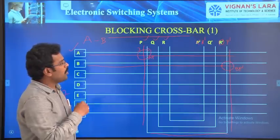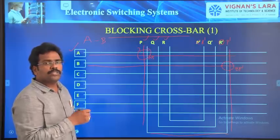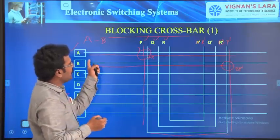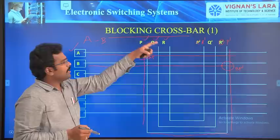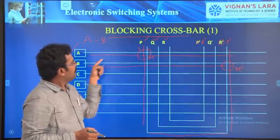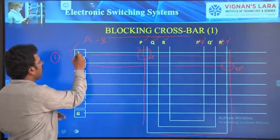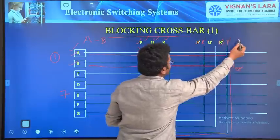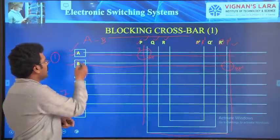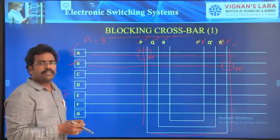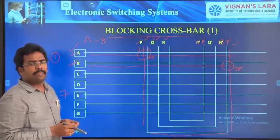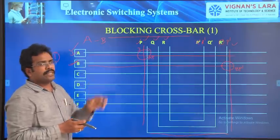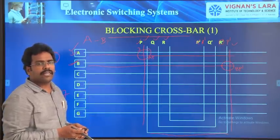To work on the above problem, we are going to use two schemes. One is: energize both horizontal A and B, then energize both vertical P and P prime, then de-energize A and B. You have to follow this sequence to establish the connection between A to B. In the next class, we will see the same blocking network with the transfer lines. Thank you.